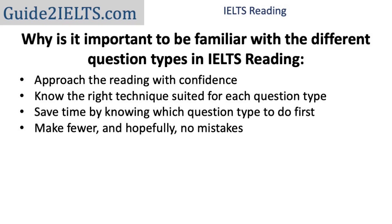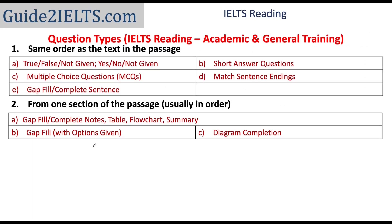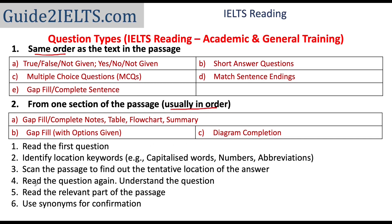Knowing the question types helps you decide which questions to do first and know the right technique for each question type — basically, it helps you find answers quickly and correctly. Most question types have answers in the same order as the information in the text. In all of these question types, our target is always to look for location key information in the questions, scan the passage for the location of the answer, then read the question carefully, understand it, and focus on that part of the passage where we expect the answer to be.